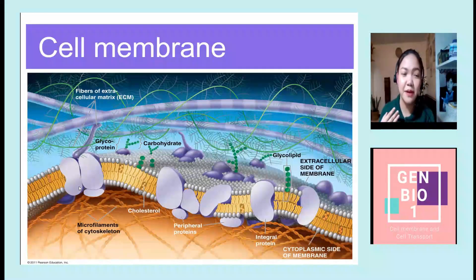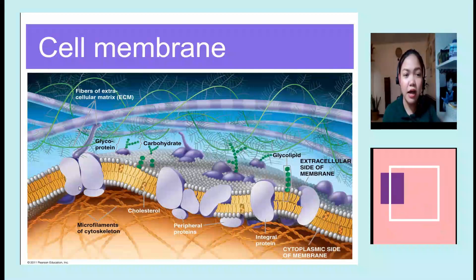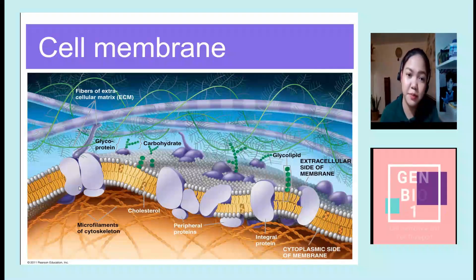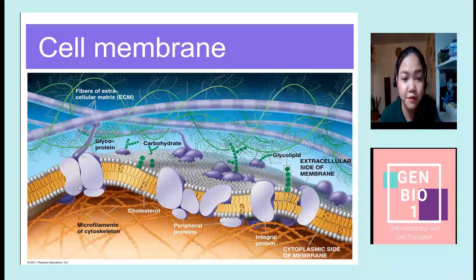Your cell membrane is comprised of many things — proteins, carbohydrates, cholesterol, and a lot of lipids. It could be glycolipid, phospholipid, and the ECM, and of course the CPCM.